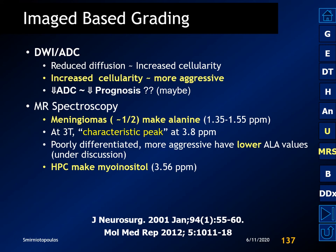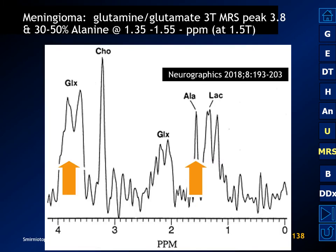There is a lot of disagreement in the literature about the actual value of having a decreased ADC value — some studies have shown higher-grade tumors have restricted diffusion, but this has not been confirmed in every paper. In MR spectroscopy, approximately half of meningiomas will show an alanine peak at 1.35 to 1.55 ppm. On 3 Tesla MR spectroscopy there is a characteristic peak at 3.8 ppm. Hemangiopericytomas make myoinositol instead of the alanine seen in meningiomas.